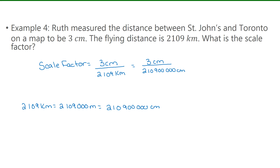Now that the units are the same, I can reduce the fraction to 1 over 70,300,000 — and there are no units since they cancel. This is one where I would definitely leave it in fraction form or as a ratio, rather than converting to a decimal.